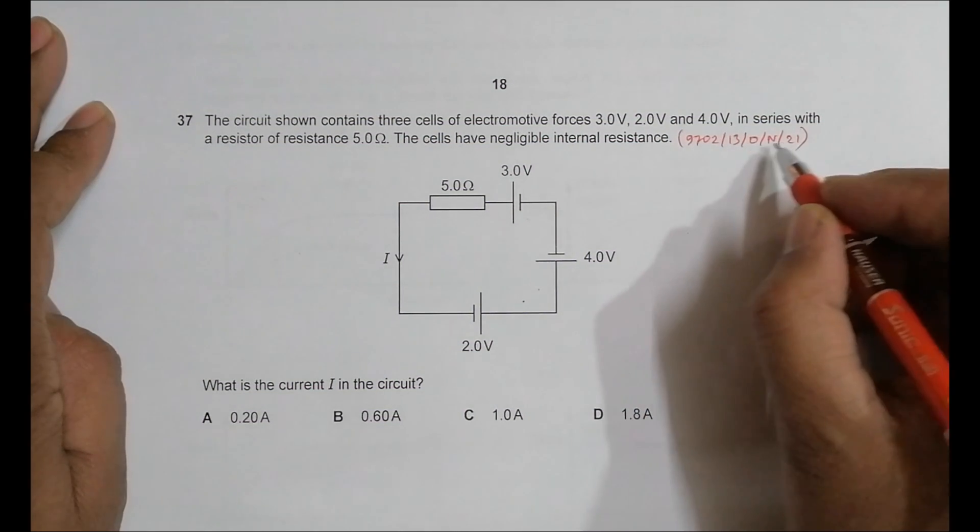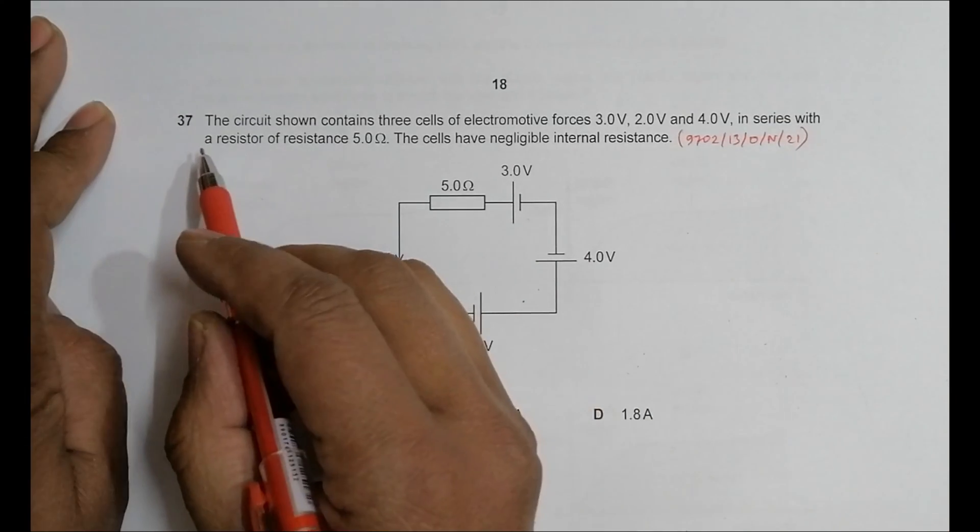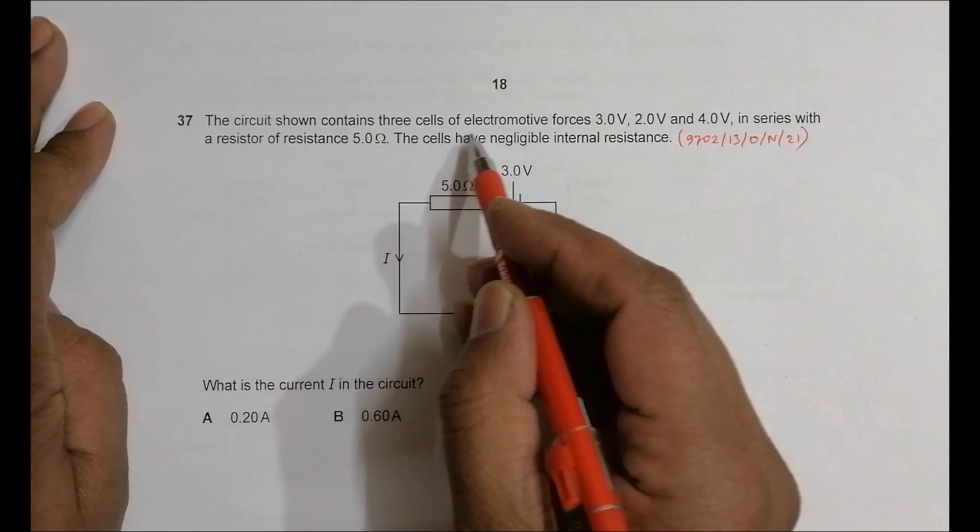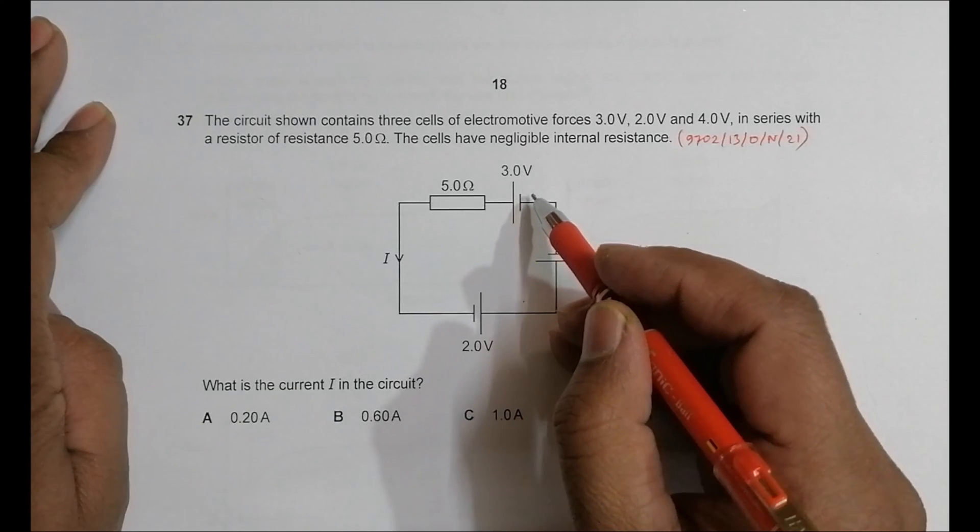Hello folks, this is a 2021 October-November Paper 1, Question 3, and the question number is 37. The circuit shown contains three cells of electromotive forces: 3V, 2V, and 4V. So there are three sources here.